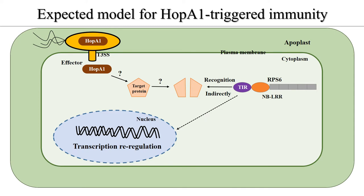Therefore, we drew the expected model like this. As most resistant proteins recognize effectors indirectly, we think that RPS6 will also recognize HopA1 indirectly, which means some target proteins related to HopA1 are involved in this pathway. When HopA1 enters a plant through a type 3 secretion system, it has a certain effect on the target proteins, and RPS6 recognizes such a change. As a result, RPS6 will transmit signal to the downstream of the plant, and finally the plant will cause an immune response.